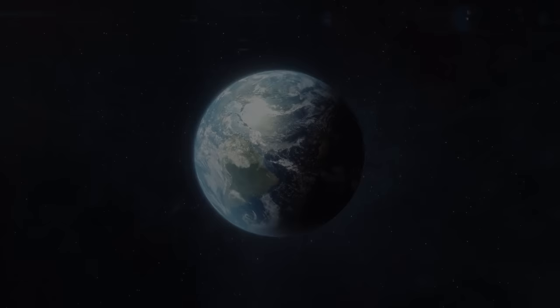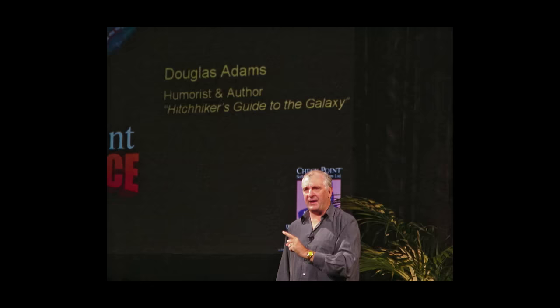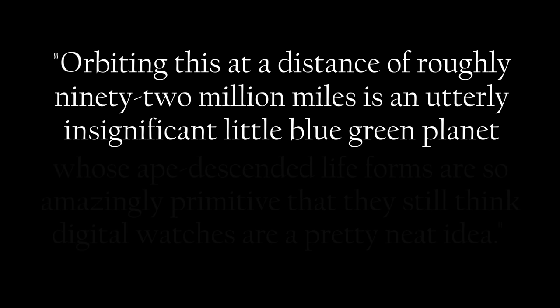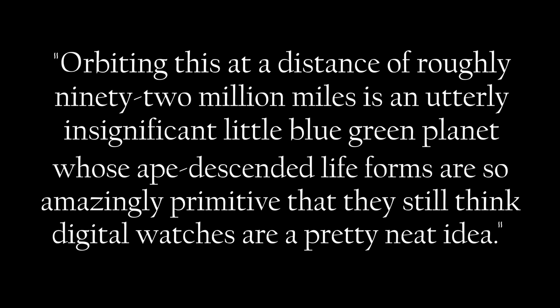But where does that leave us? One possible answer came from the ever insightful Douglas Adams, who wrote in his comic novel Hitchhiker's Guide to the Galaxy: Far out in the uncharted backwaters of the unfashionable end of the western spiral arm of the galaxy lies a small, unregarded yellow sun. Orbiting this at a distance of roughly 92 million miles is an utterly insignificant little blue-green planet, whose ape-descended life forms are so amazingly primitive that they still think digital watches are a pretty neat idea.